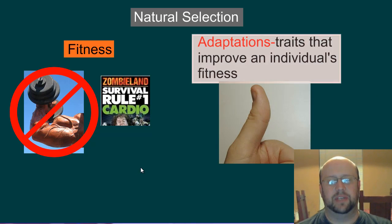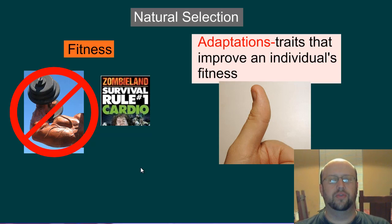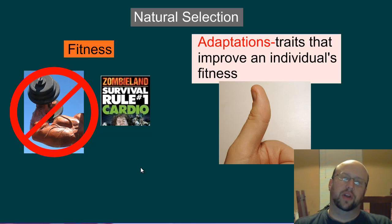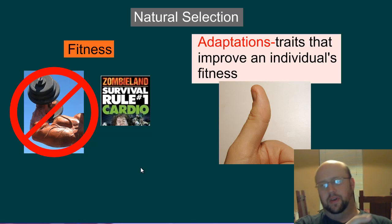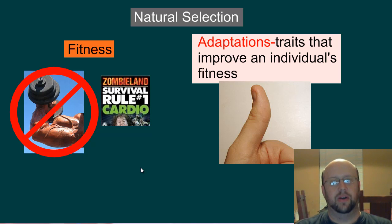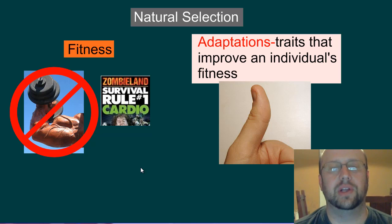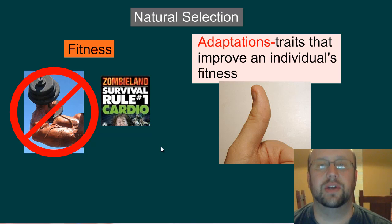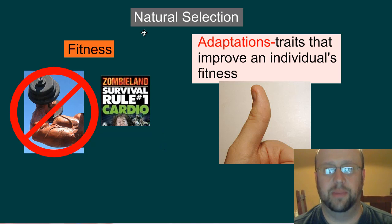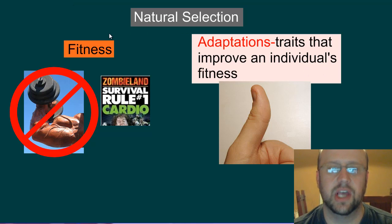That leads us to the idea of adaptations. Adaptations are things that are going to improve an individual's fitness in a specific environment. For instance, plants that have needles require less water, so they can survive better in areas with lower water — maybe the water level changed due to some climatic change. Therefore the plants with much narrower leaves, needles, were much more suited to survive. Those are the ones that were fittest for their environment, so they reproduced more, and over time they're going to be most dominant in that area.